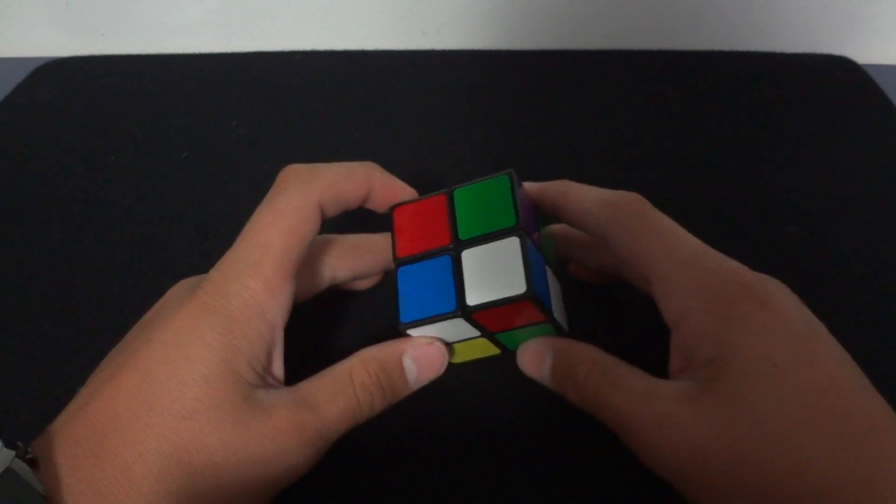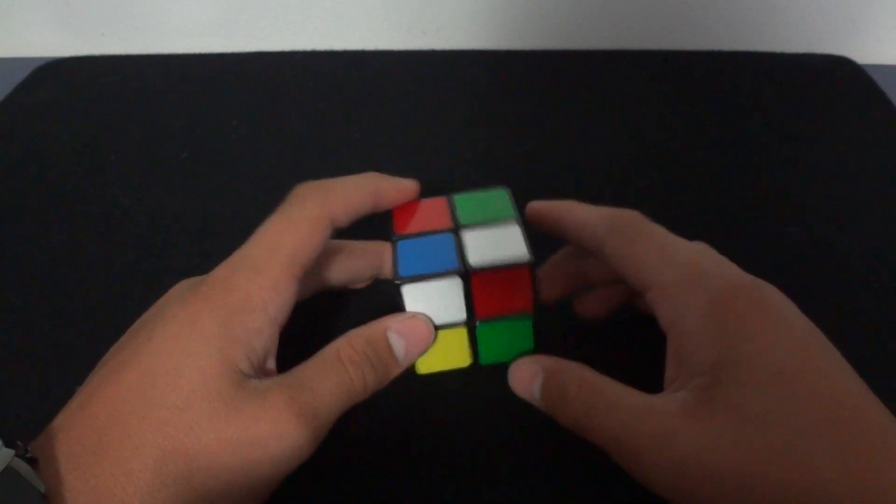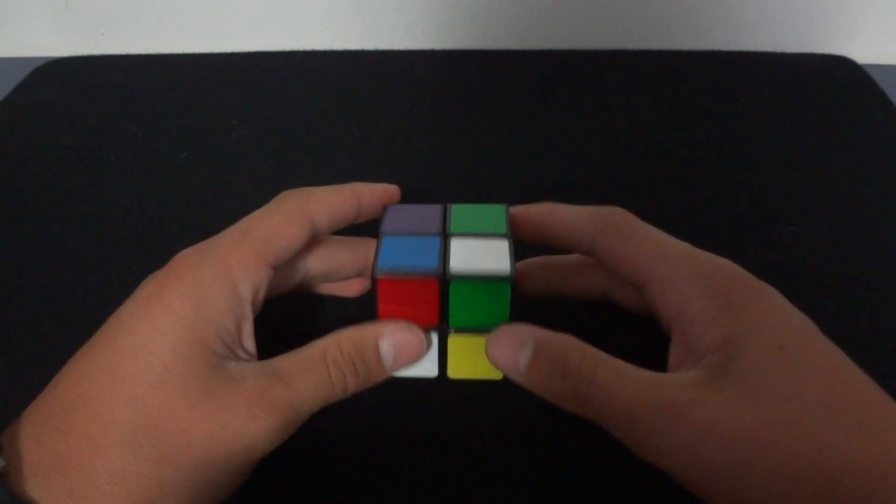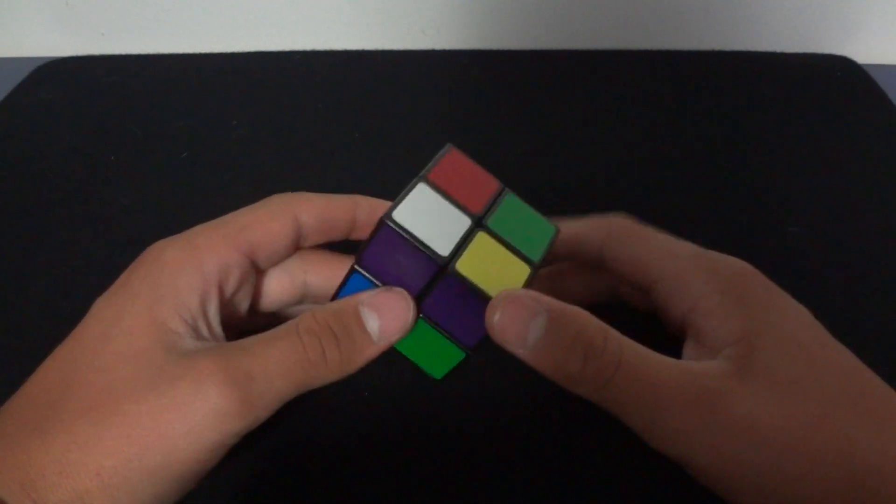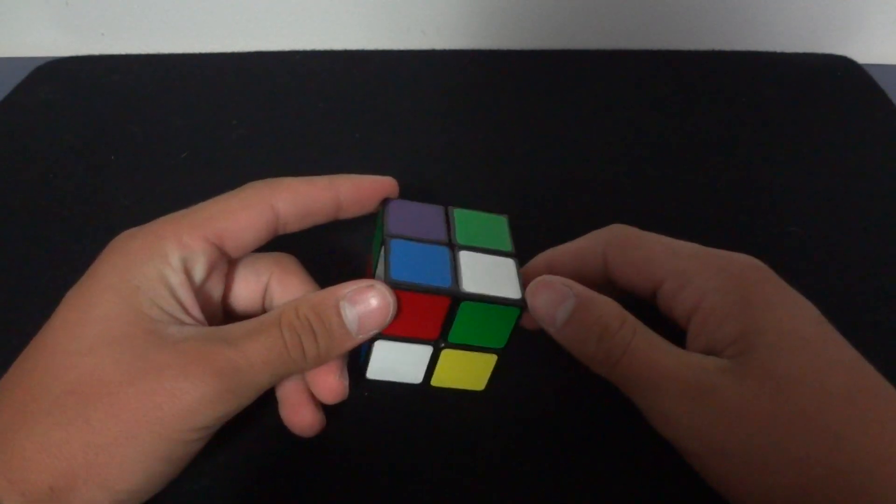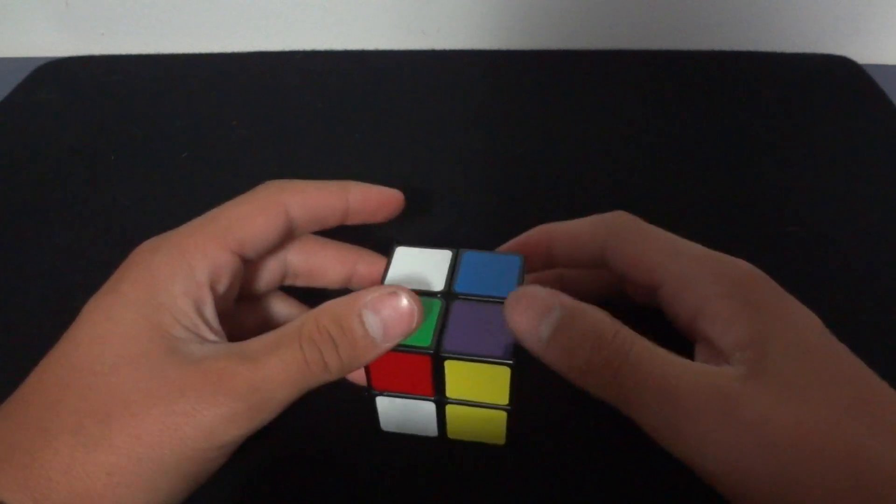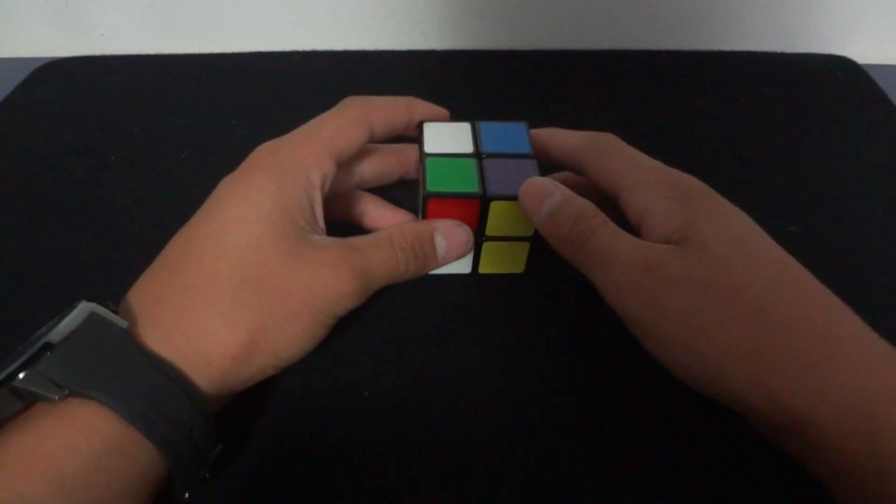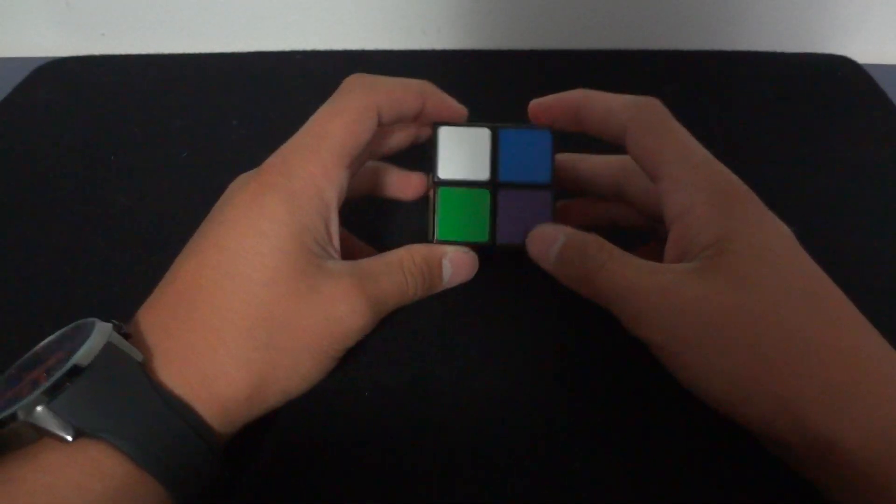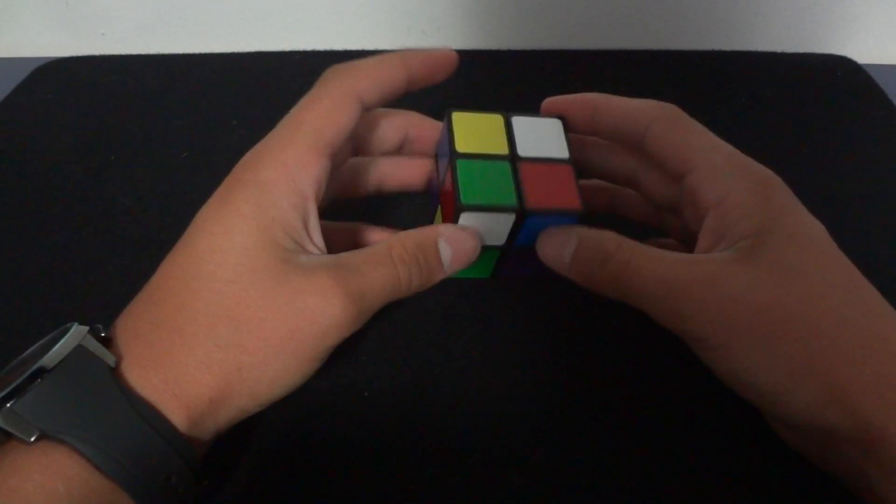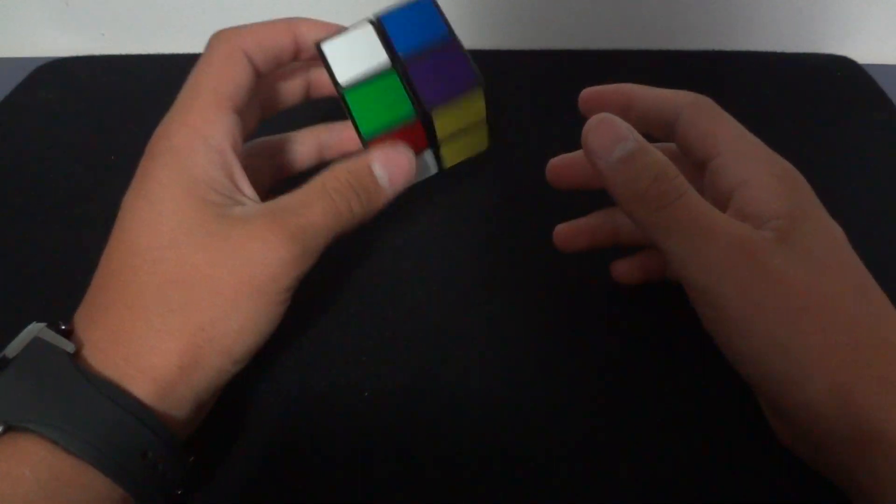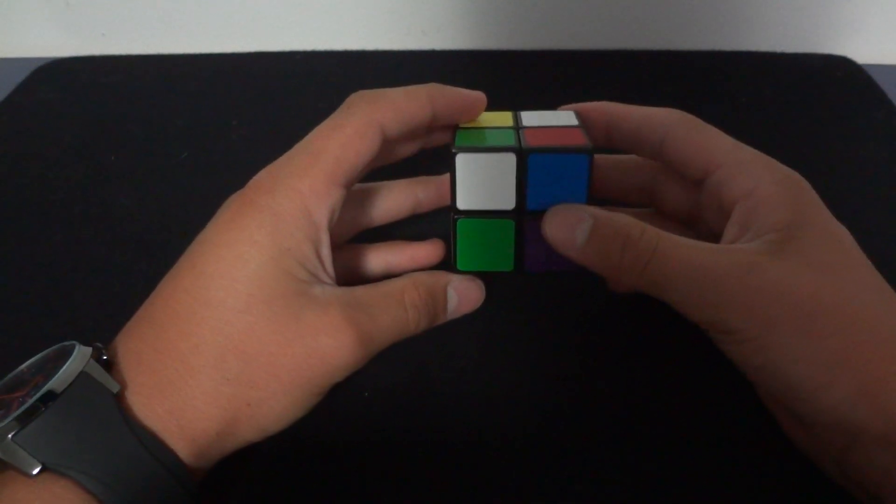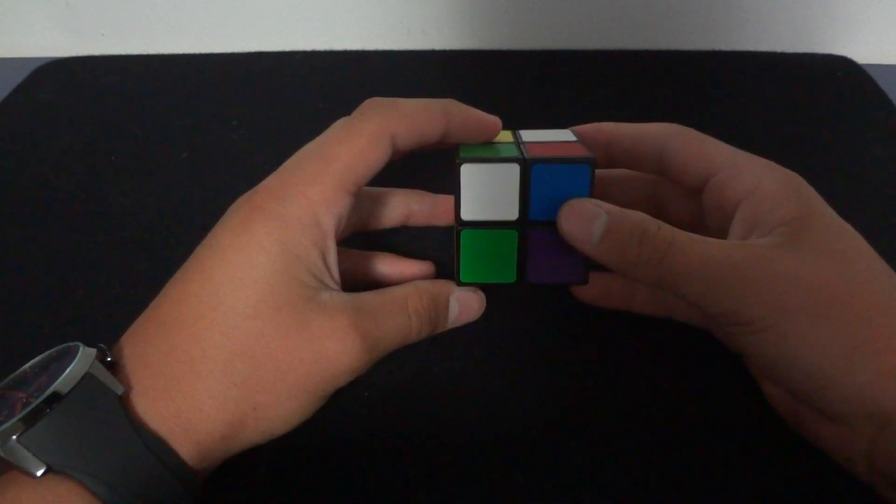Now, when solving this 2x2x2, there are going to be some algorithms that you're going to need to memorize. I'm going to put them in the description box, but you also just need to keep watching the video over and over until you completely understand and know the algorithms by heart. Sounds difficult, but you'll be able to get it in about a half hour. After about a half hour, I was able to solve this pretty much by myself.